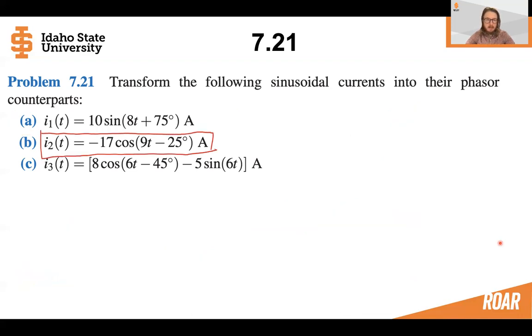Now let's move on to part b. In part b, we can see that this is already in cosine form. However, it has a negative amplitude, which we usually don't represent our phasers this way. So let's see how we can convert this to a positive amplitude.